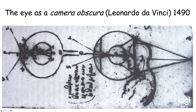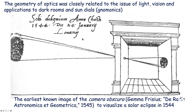Geometry applied also to the idea of vision — how people see with the eyes. Even Leonardo da Vinci saw the eye as a potential camera obscura, a point where light got in through a little hole and projected on the back of the eye where the retina is. The geometry of optics was closely related to the issue of light, vision, and application to the darkroom, sundials, and gnomonics. You can see here the earliest known image of the camera obscura, from Gemma Frisius's Cosmographia Astronomica et Geometrica in 1545.